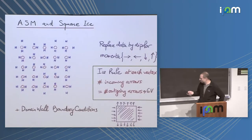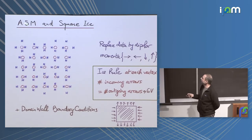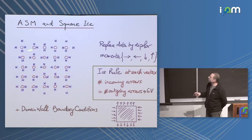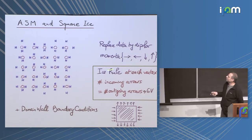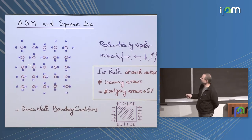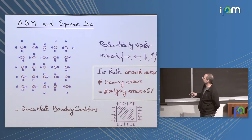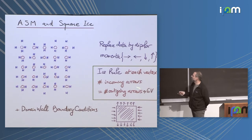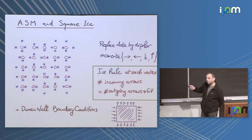So I start with the basics. Alternating sign matrices come really from square ice — H₂O in a lattice where the oxygen ions are on square lattice vertices and the hydrogens are along edges, forming these molecules. Two hydrogen ions have a tendency of being closer to an oxygen, so you can model that with dipolar momenta, which are just arrows that point in the right direction. This condition that two hydrogens are always closer to one oxygen gives rise to the so-called ice rule: at each vertex, the number of incoming arrows equals the number of outgoing arrows. In a square lattice it will be two incoming, two outgoing, giving rise to six possibilities — the six vertices of the six-vertex model.